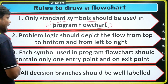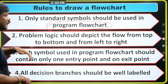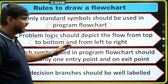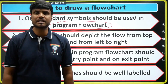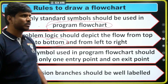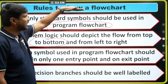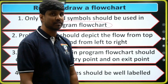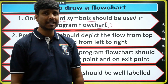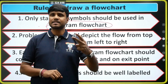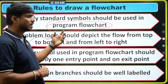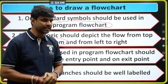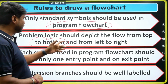The second rule is: the program logic should always be depicted from top to bottom and left to right. This is the second rule when writing a flowchart.